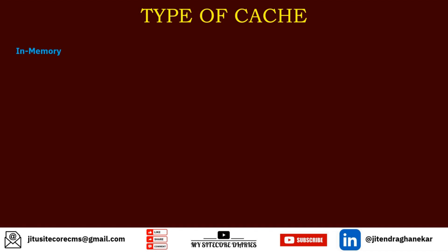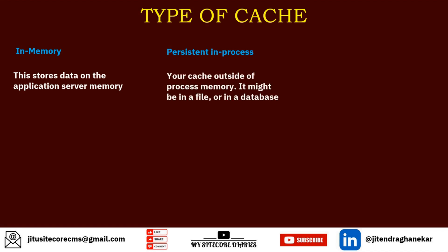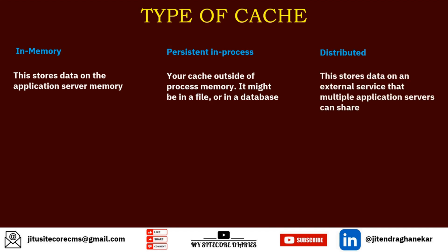Now let's see the types of cache. There are three types. First is in-memory — this stores the data on the application server itself. Then you have persistent or out-of-process — your cache is stored outside of the process memory; it might be in a file or in a database. You can have a file as a cache to store data, or a database where you store the data — that is called persistent out-of-process caching.